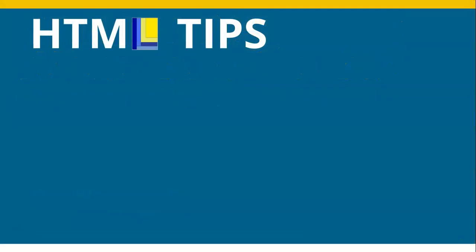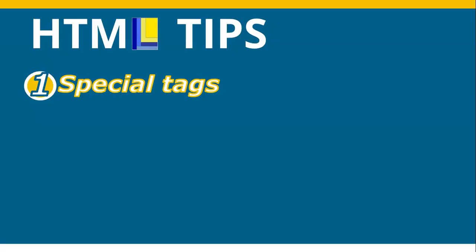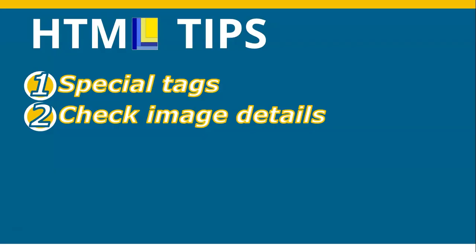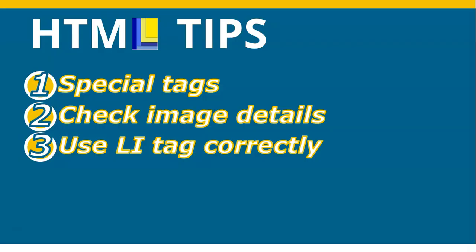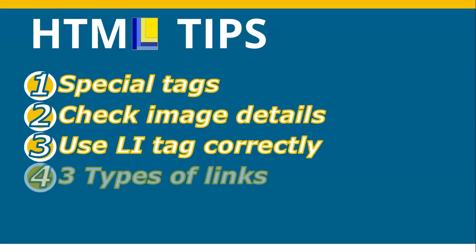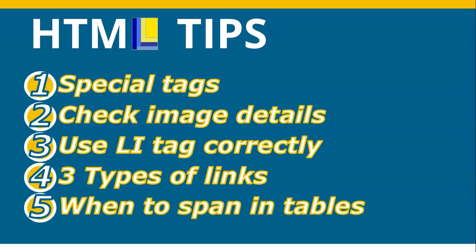To recap the five HTML tips: first, special tags — remember BR, HR, and IMG do not have a closing tag. Second, check the image details, particularly the file extension, as that's normally what stops your image from displaying. Third, use the LI tag correctly inside your ordered and unordered list tags. Fourth, remember the different types of links, especially the bookmark link — first create the bookmark, then the link to it. Fifth, when merging cells in a row you span over multiple columns, and when merging cells in a column you span over multiple rows.